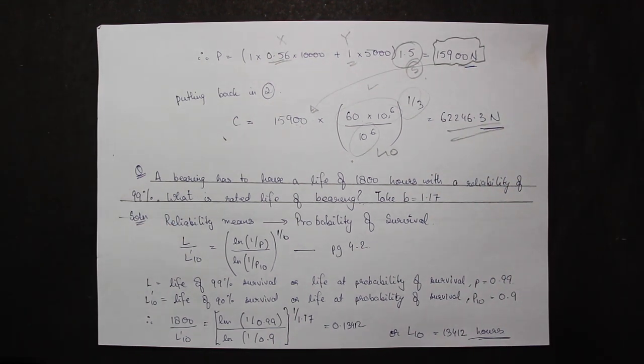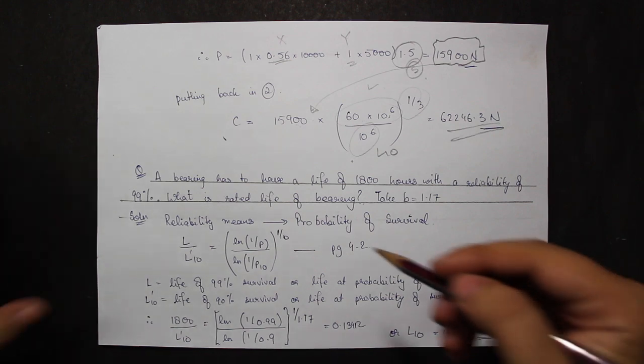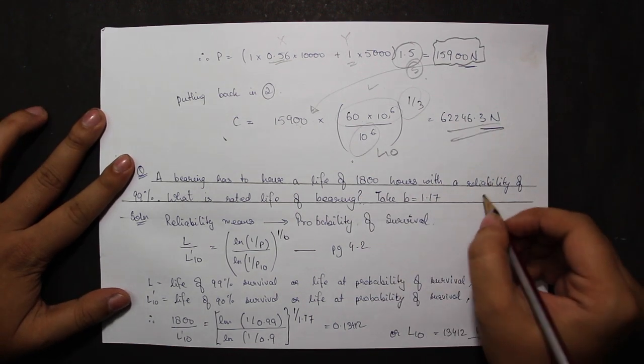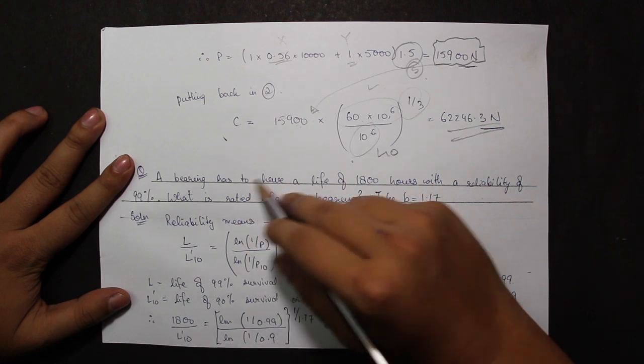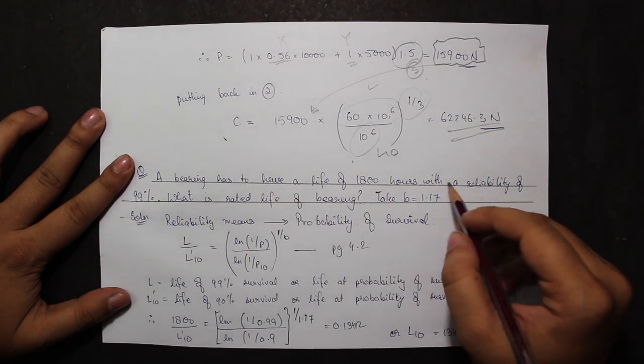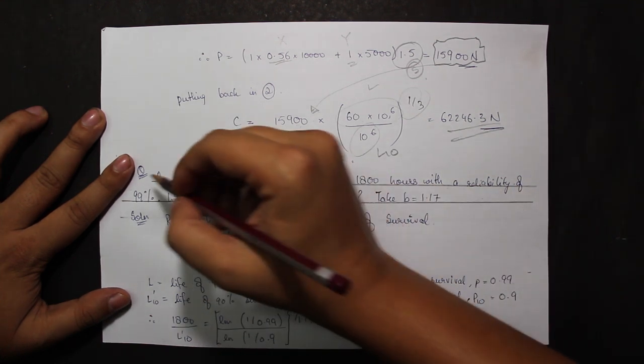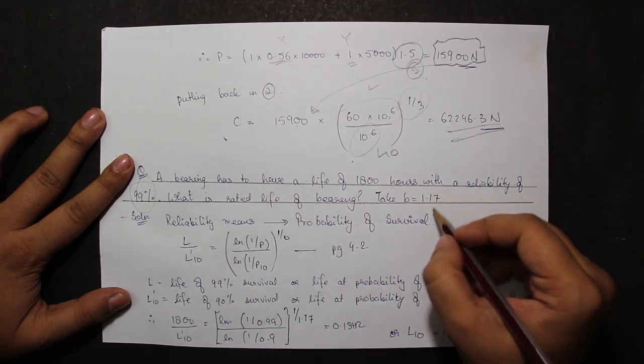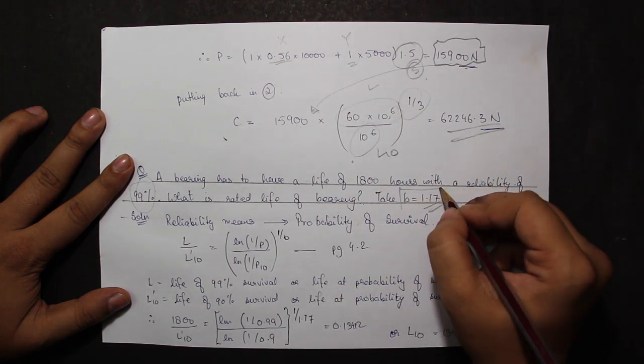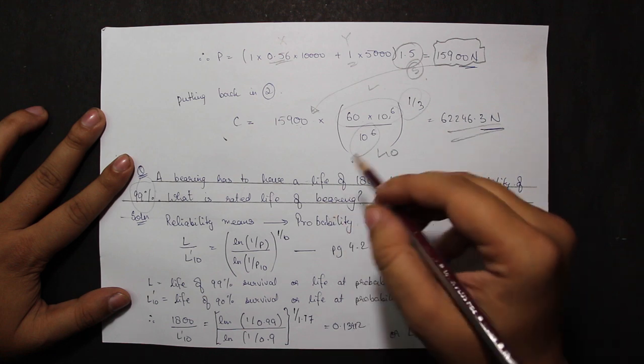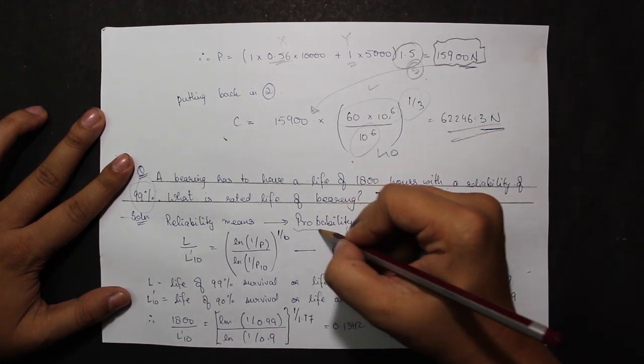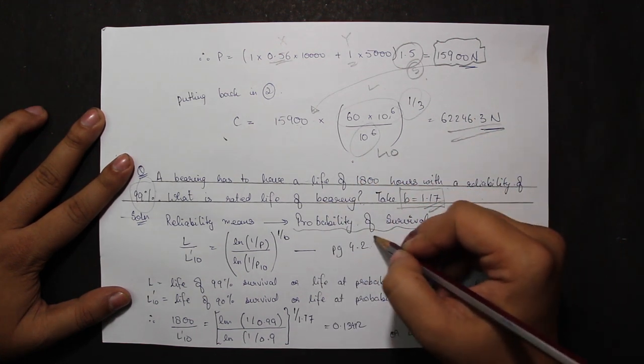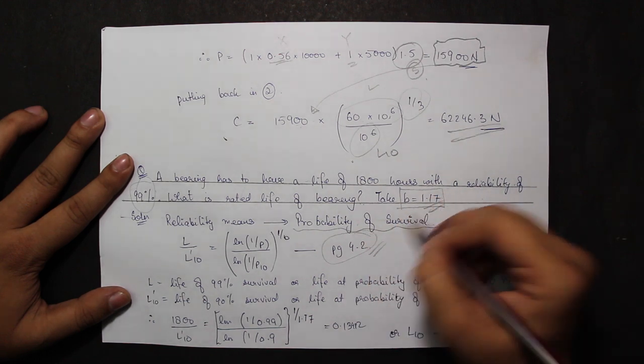Another formula used for different questions is the probability of survival. The question states, A bearing has to have a life of 1800 hours with a reliability of 99%. What is the rated life of bearing taking B as 1.17? Now, I have to keep in mind that reliability means probability of survival. So I will be using the formula probability of survival from page 4.2 itself.